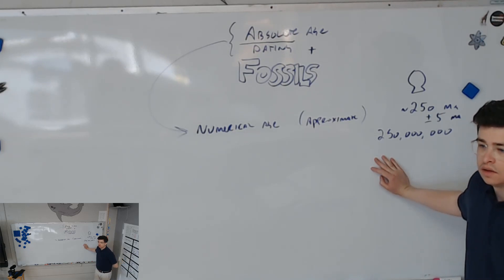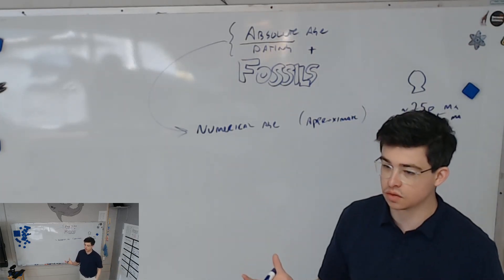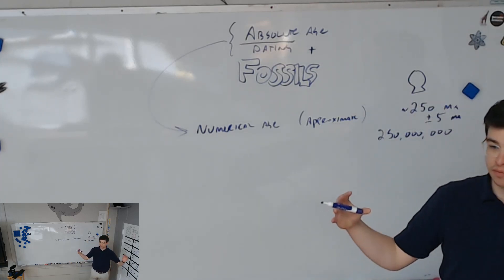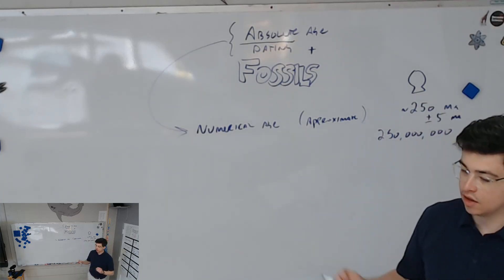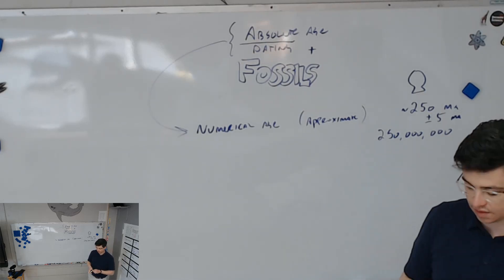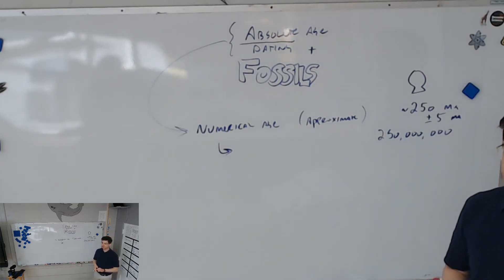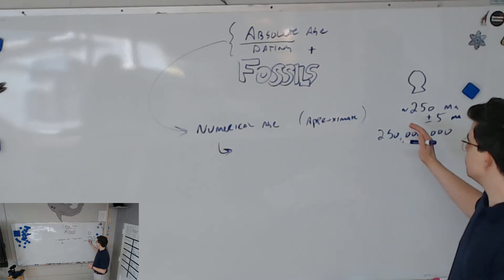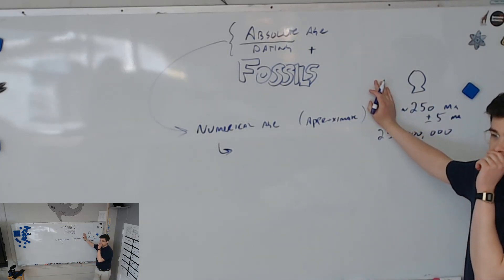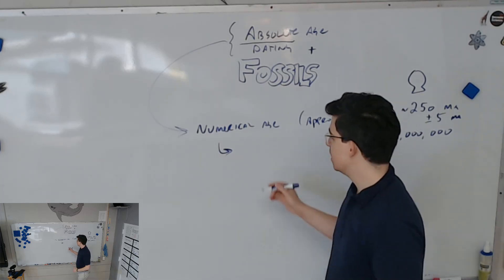So how do we do it? How do we find the numerical age? The most commonly used is this idea of radiometric dating. Radiometric dating, referring to what? Nuclear radiation. We learned about this when you were a freshman.